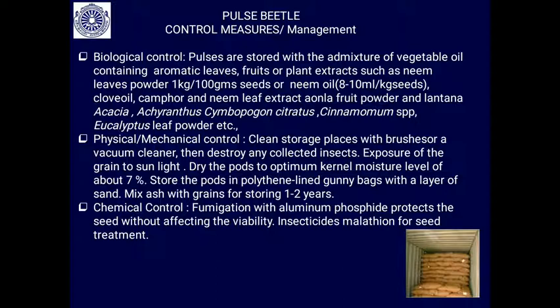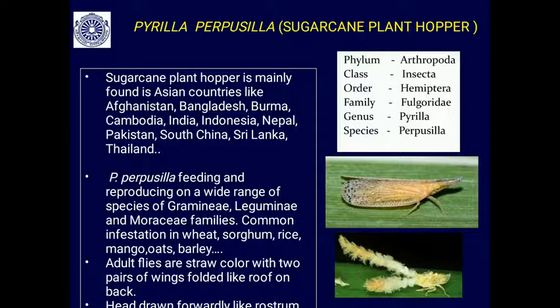For chemical control, fumigation with aluminum phosphide protects the seed without affecting viability. Malathion can be used for seed treatment. Mild insecticides applied at sowing time as seed treatment can also prevent infestation by the pulse beetle.